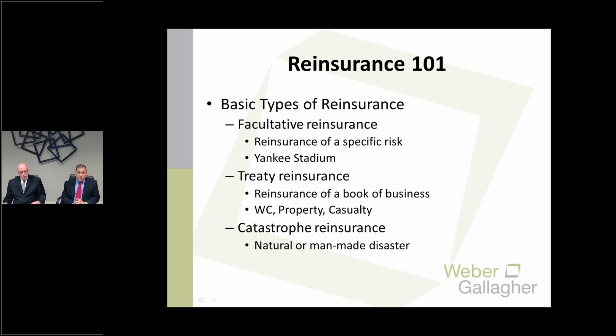What are the different types of reinsurance? Facultative reinsurance involves a reinsurance of a specific risk. For example, when Yankee Stadium was built, given the amount involved, there were specific reinsurers who accepted the construction risk and builders risk for that project — only with respect to losses or claims asserted under the ceding policies. There's also treaty reinsurance, a broader arrangement where instead of specific risks being identified, the reinsurer agrees to accept an entire class of risks.